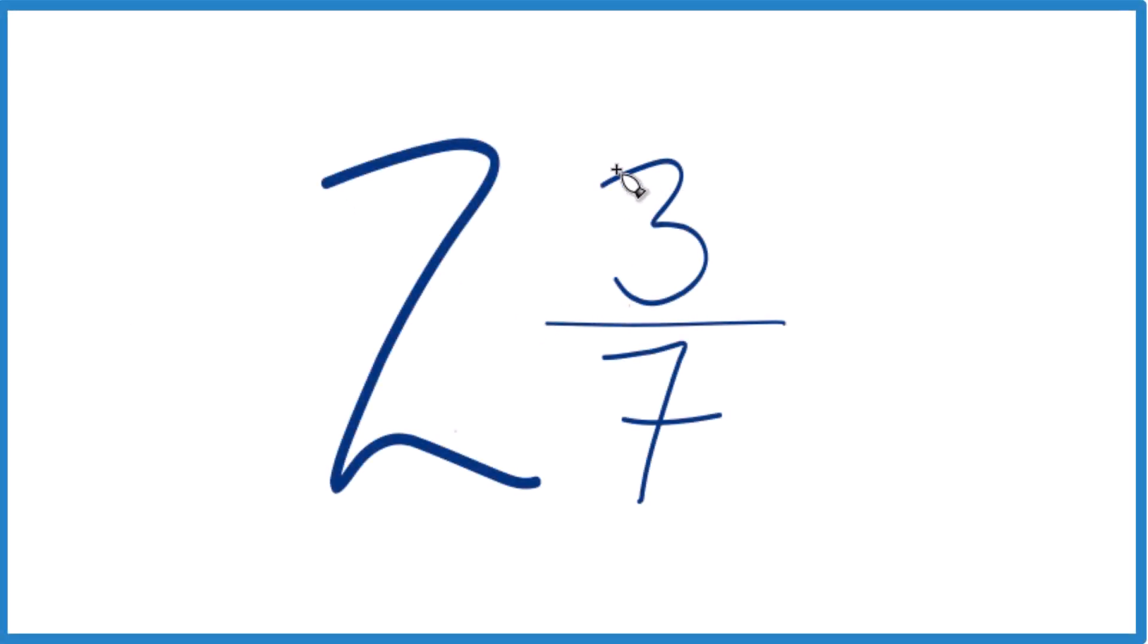Okay, let's convert the mixed number 2 and 3 sevenths to an improper fraction. Here's how you do it.